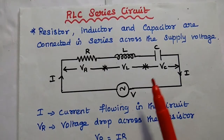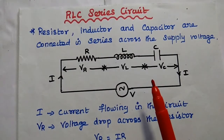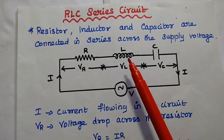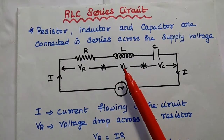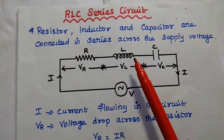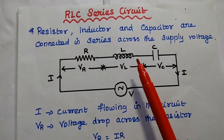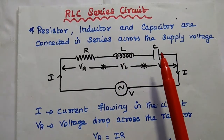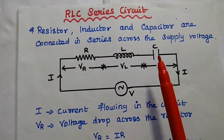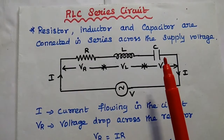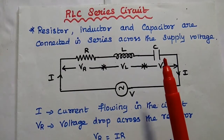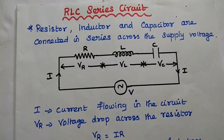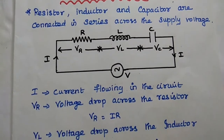This RLC series circuit is widely used in tuning circuits for radio and TV applications because the inductive reactance of the inductor is directly proportional to frequency, while the capacitive reactance of the capacitor is inversely proportional to the frequency of the circuit. We can simply adjust the L and C values to get a particular resonant frequency.